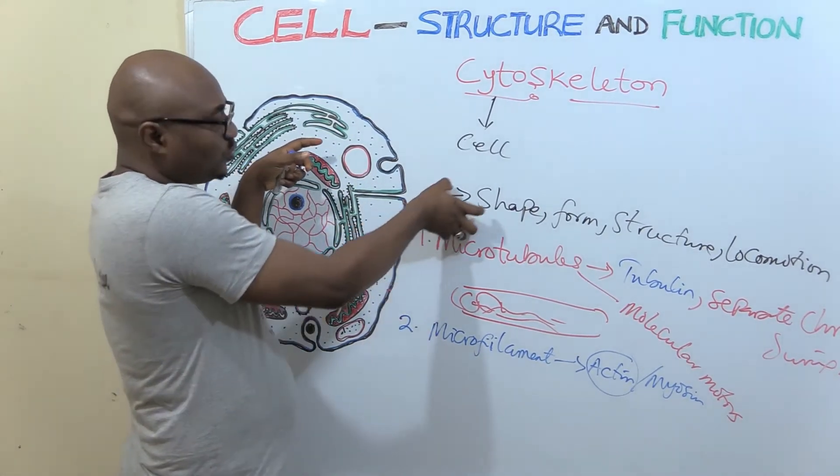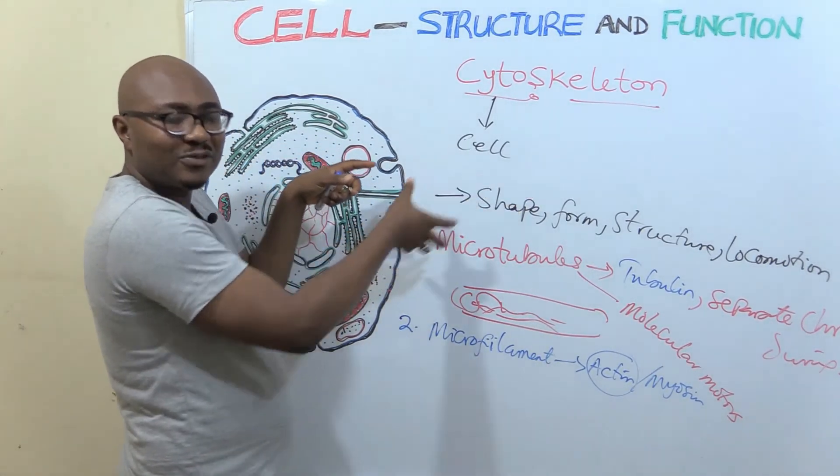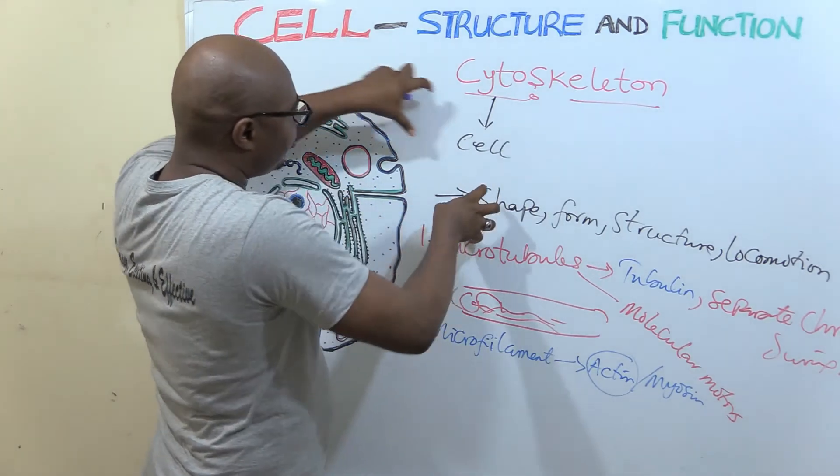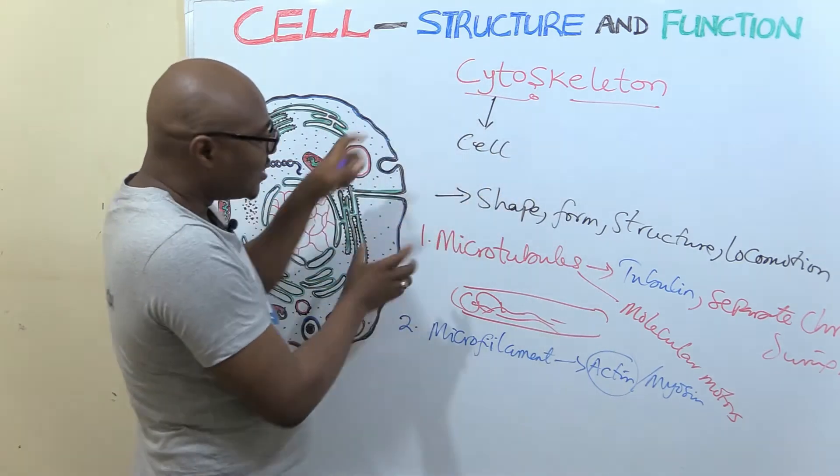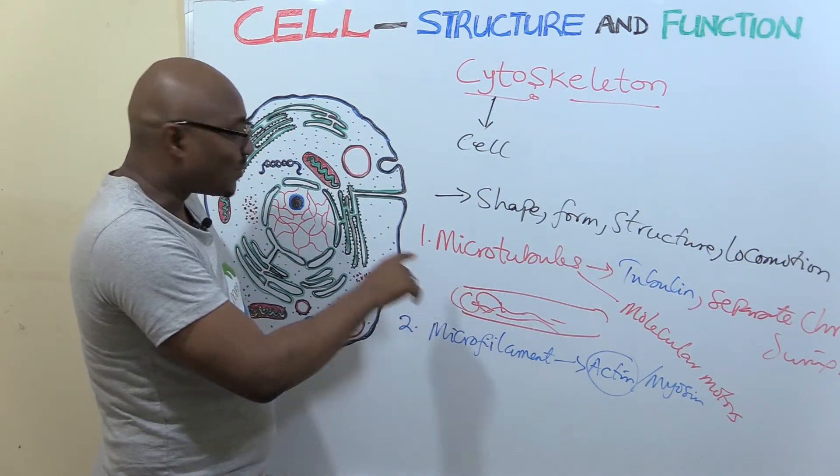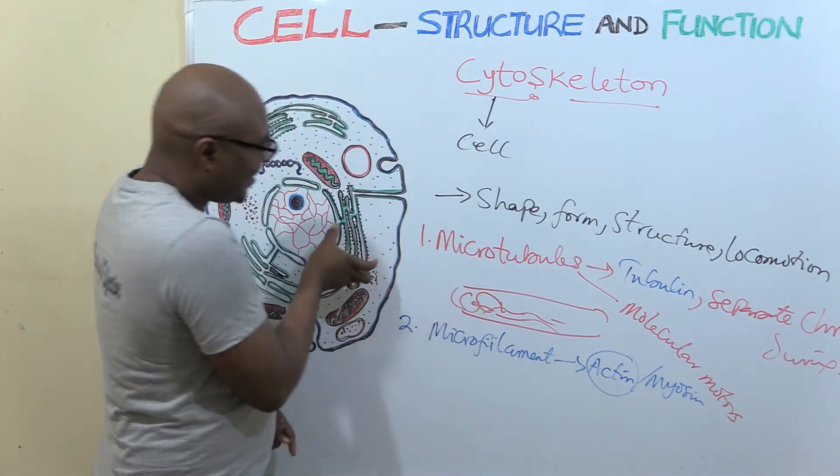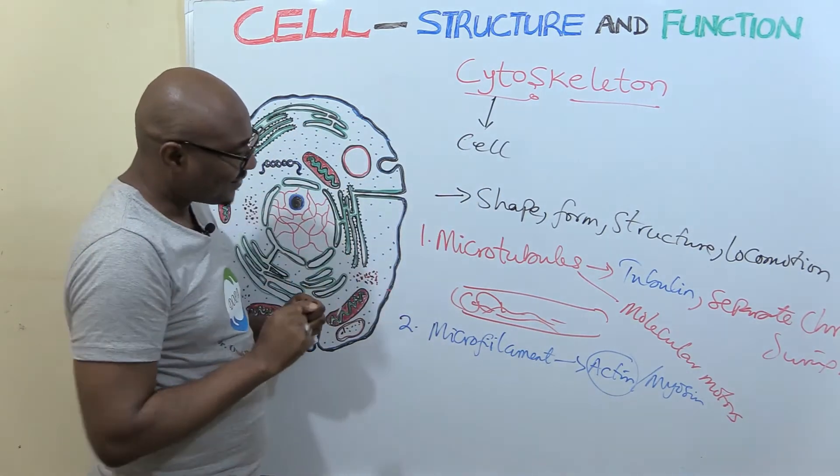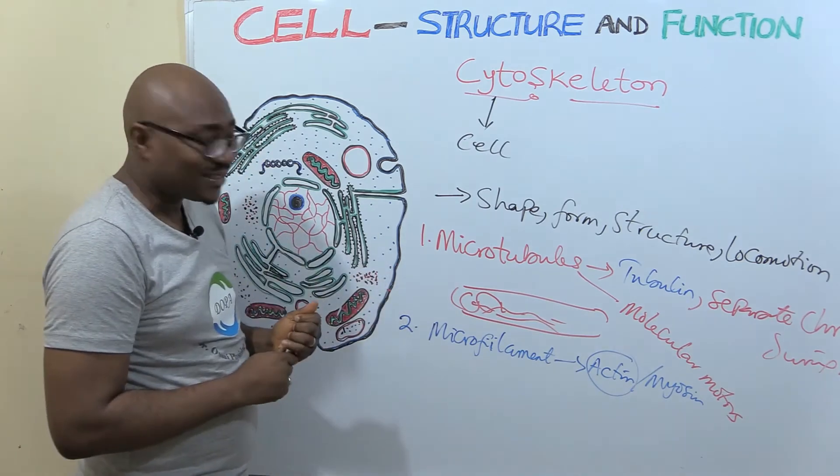So it protrudes what we call pseudopods, false feet. So this part will come out, move, come out like that. So what helps that to happen is the actin filament. It helps it change shape for it to move. So that is what actin does.